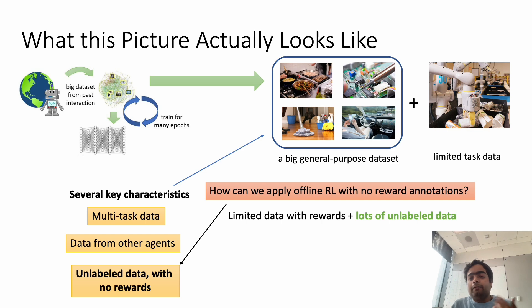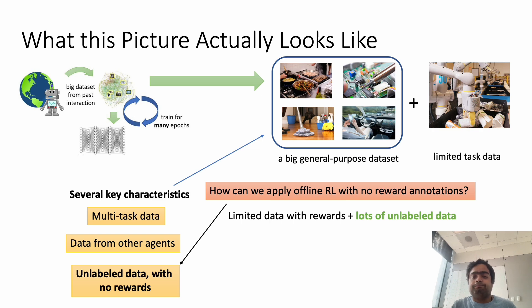The big question this raises is: how can we actually apply offline RL when we are not provided with reward annotations, since reinforcement learning methods are quite dependent on rewards to learn any meaningful behavior? This is precisely the setting we want to study in this paper.